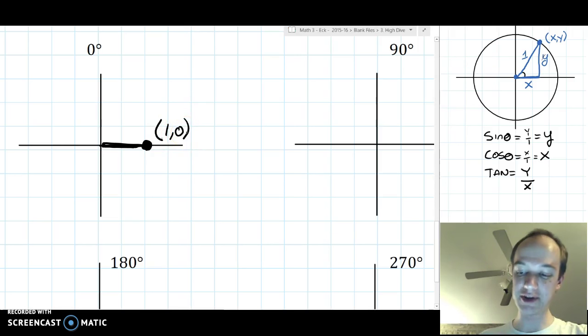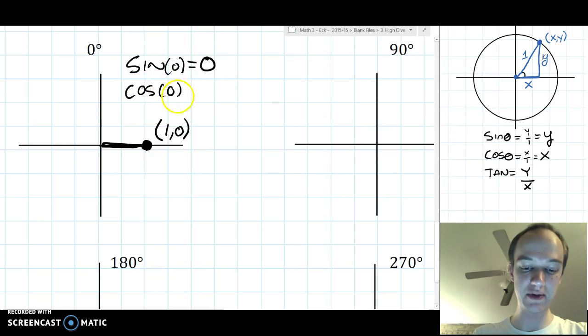Well, if we look at our equations over on the side, then sine of 0 is equal to the y coordinate. So that's just 0. Cosine of 0 is equal to the x coordinate. So that's 1.